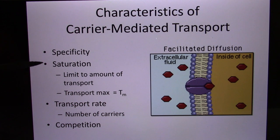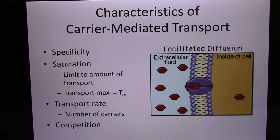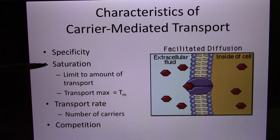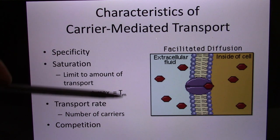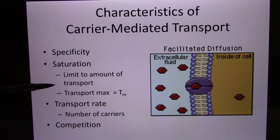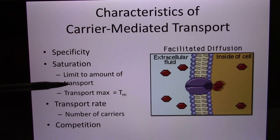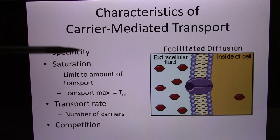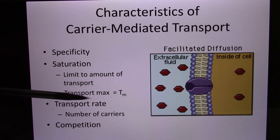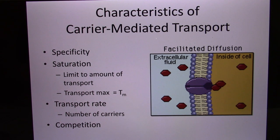They also have saturation — they can be saturated. Think about the carrier like a shuttle: it has limited seats. When all the seats have been bound, they are saturated and they reach the transport maximum. That's why diabetes patients have to watch their blood sugar level — they don't want their blood sugar level to go over the limit and reach saturation, reaching the transport maximum.